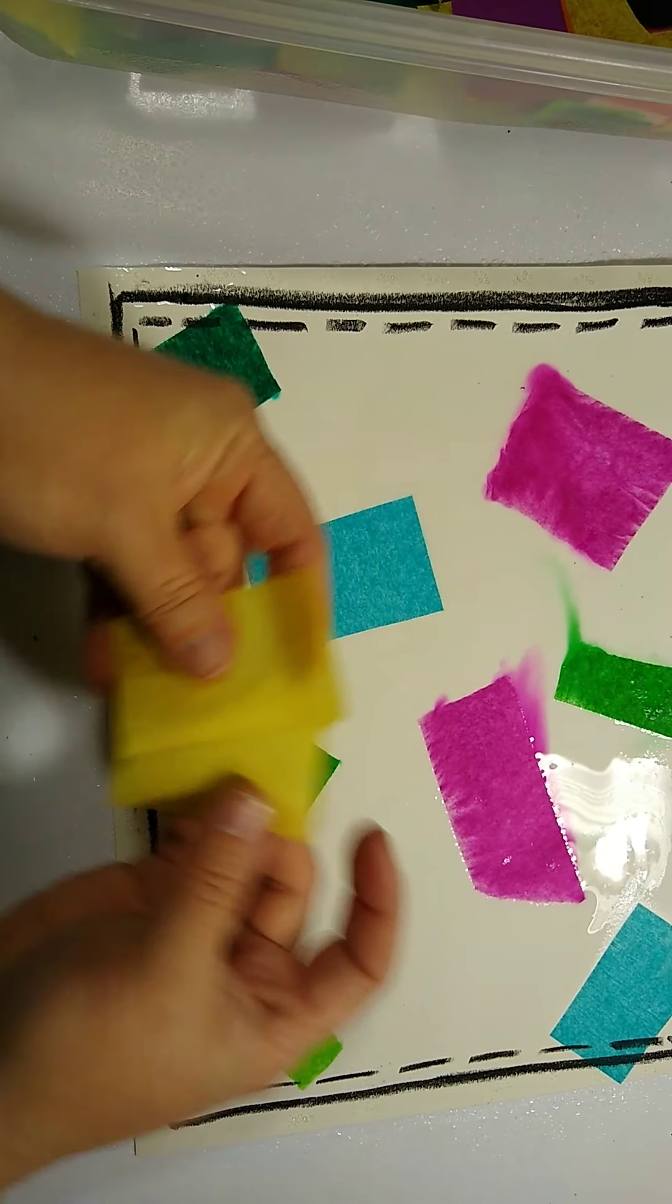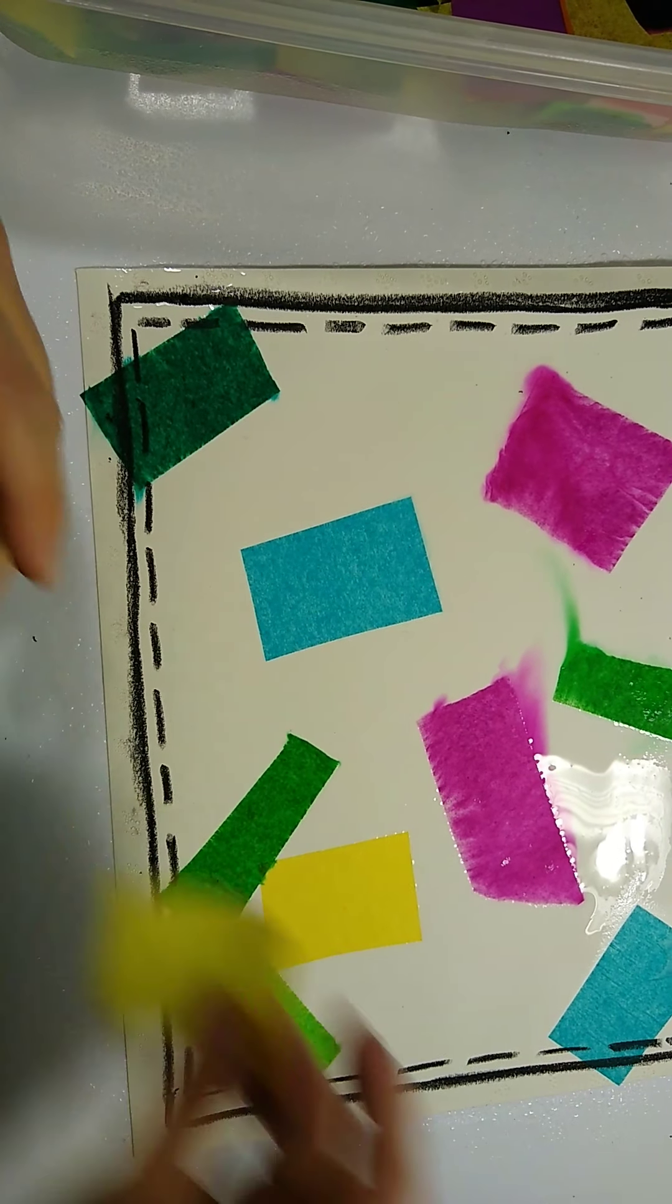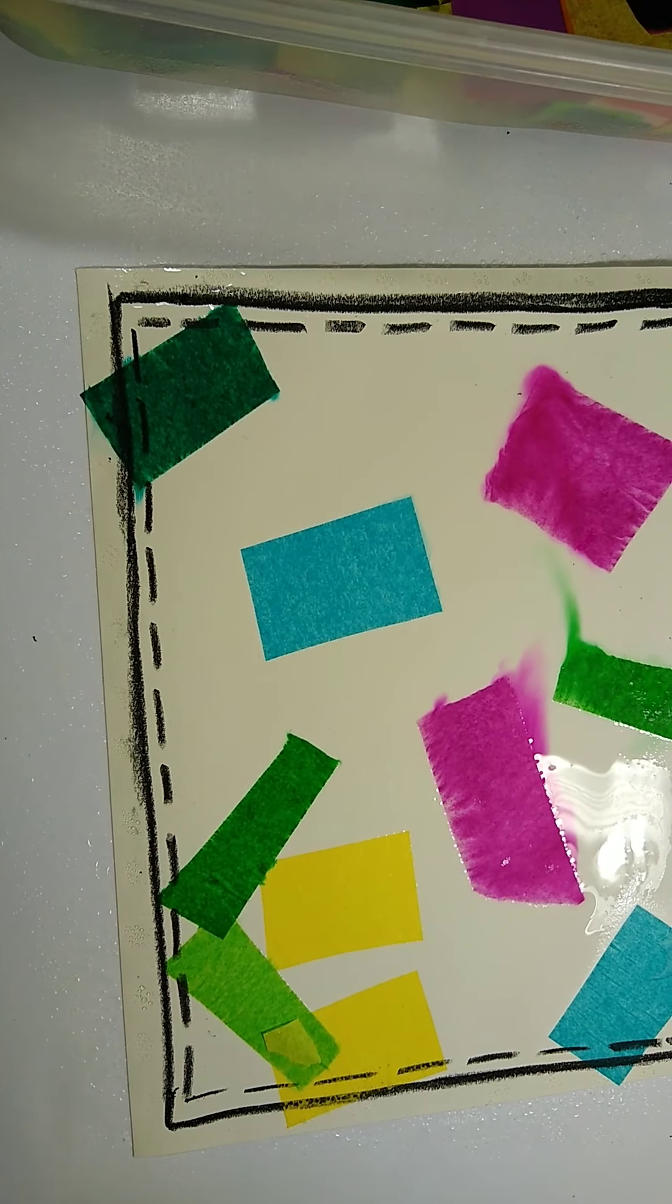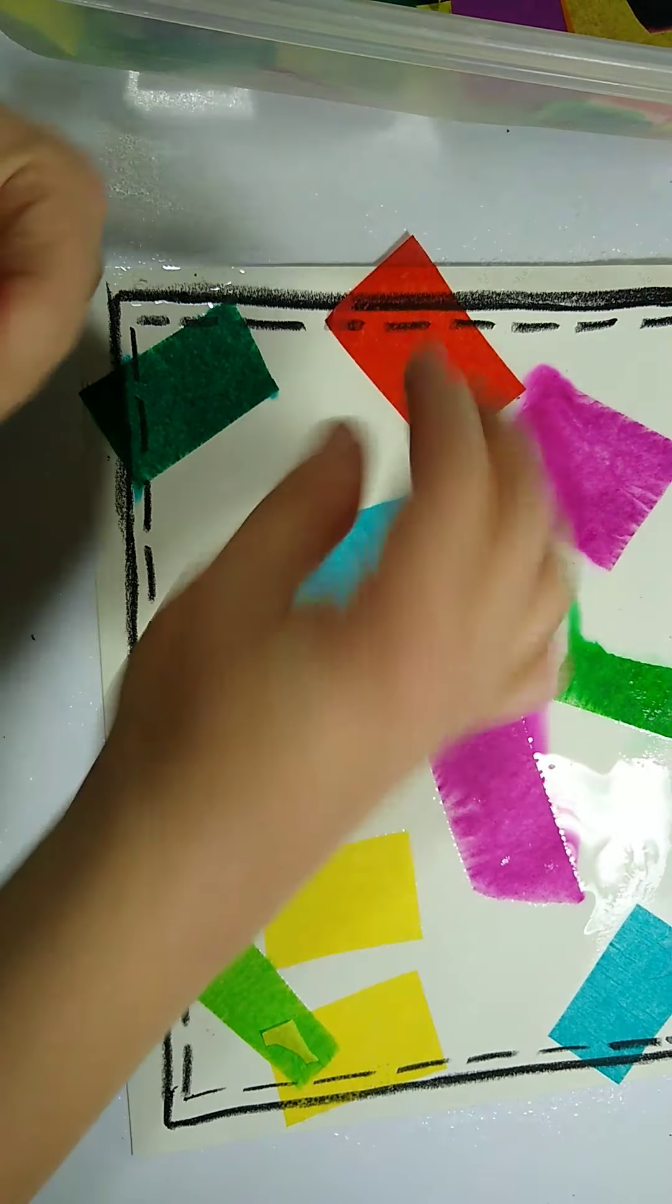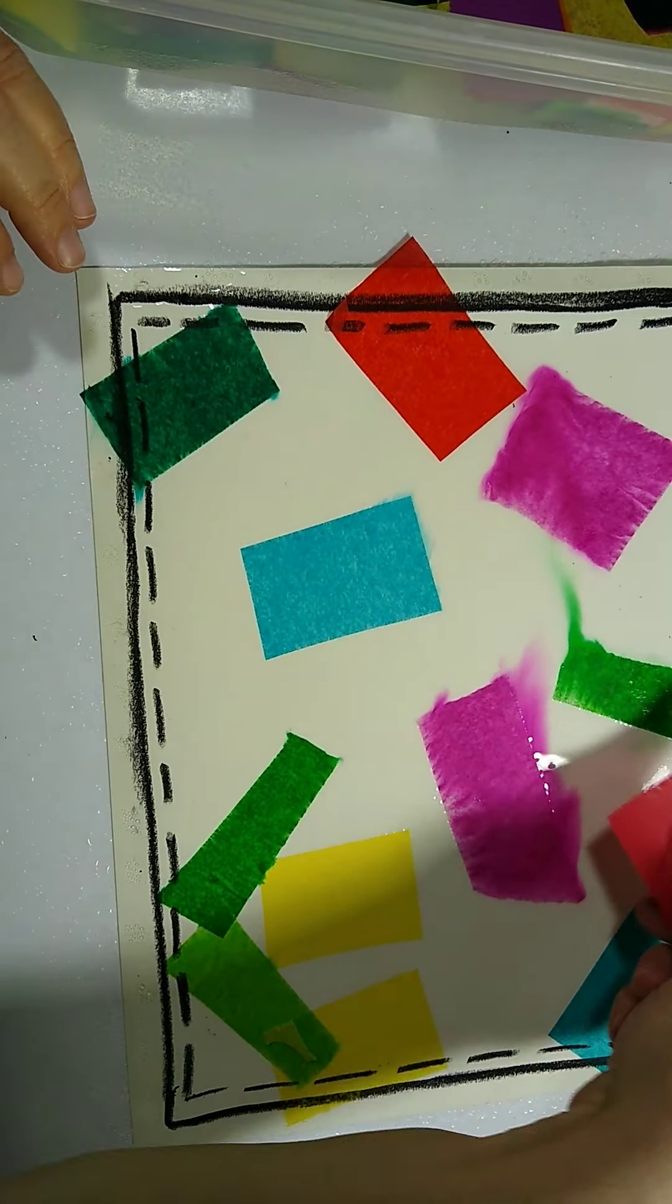As you see, our paper is leaching. This tissue paper is turning into watercolor right before our eyes and it is putting its pigmentation into the paper.